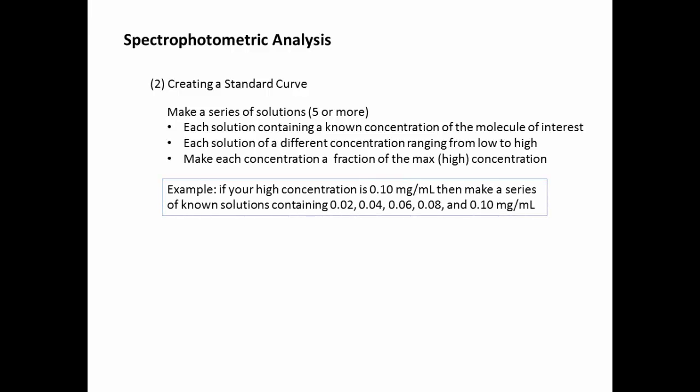For example, if the highest concentration in your series of solutions is 0.1 milligrams per milliliter, then you'll make a series ranging from 0.02 to 0.1 in different increments, so 0.02, 0.04, 0.06, 0.08.